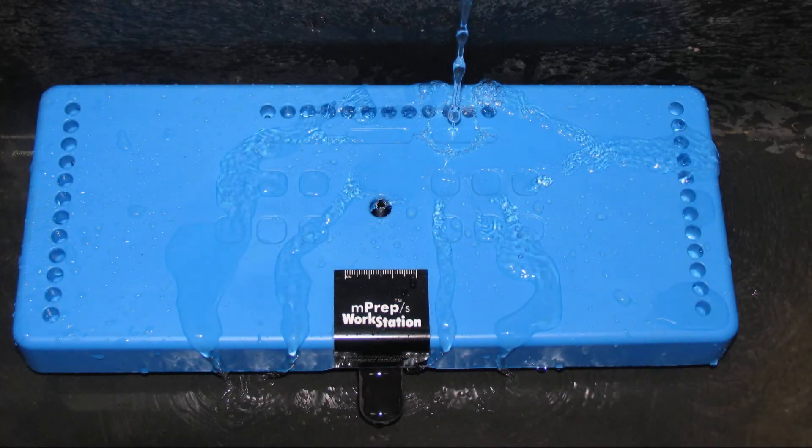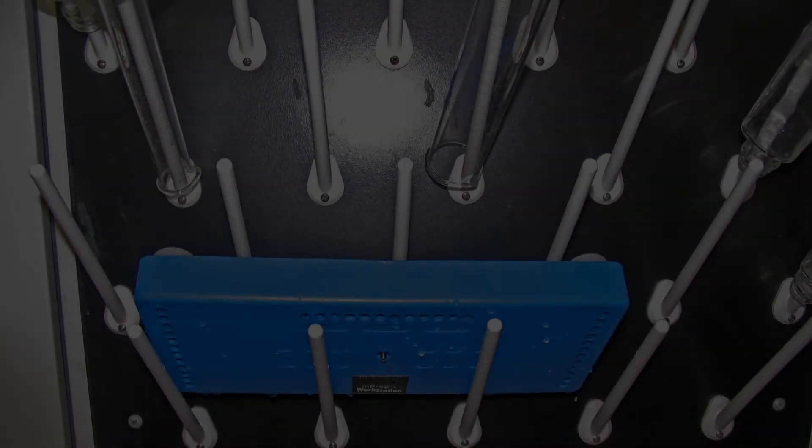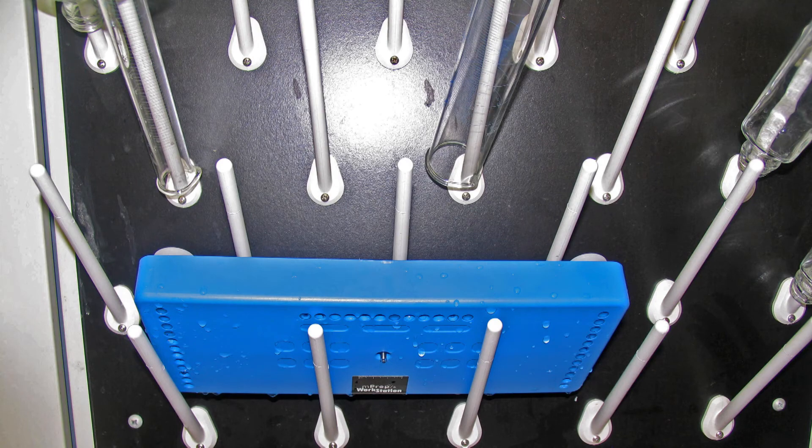After use, the MPREP workstation is easily washed by placing it under running water. Note that the spreading rod should be removed so it won't be lost. After washing, the workstation can be dried on a rack.